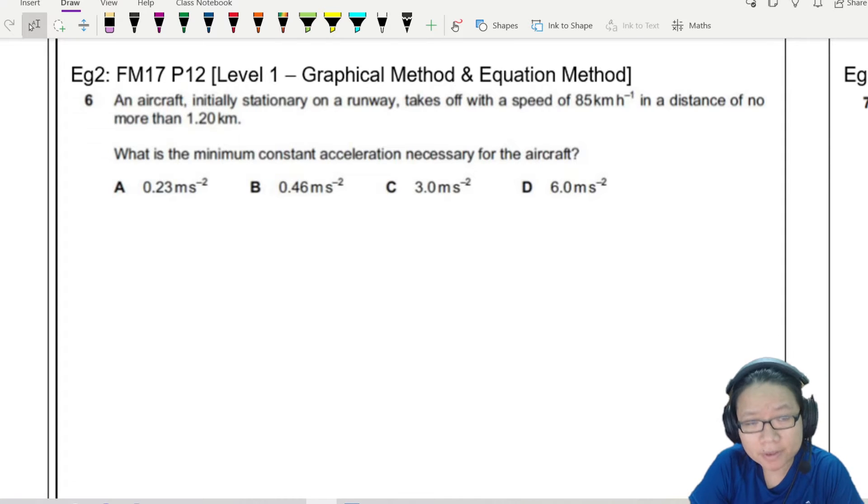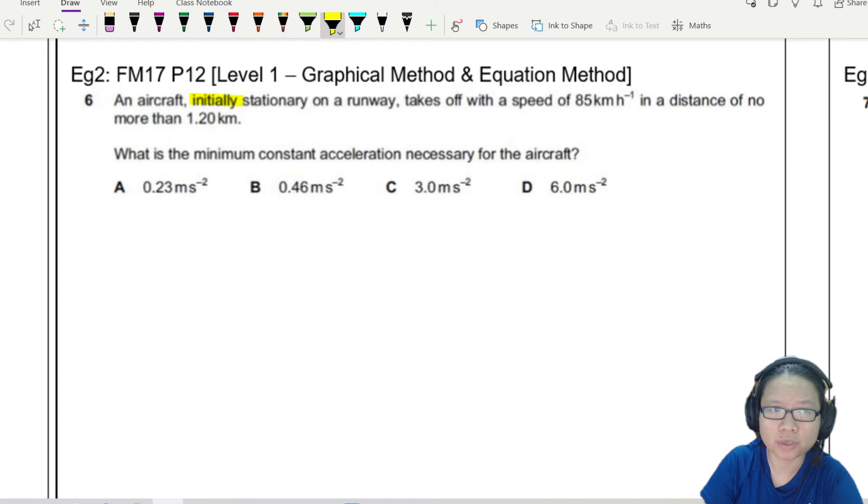Here is another example using kinematics equation. Let's read the question. An aircraft initially stationary on a runway takes off with a speed of 85 km per hour, probably going to have to put an exclamation point, maybe some conversion needed, with a distance of no more than 1.2 km. What is the minimum constant acceleration necessary for the aircraft?